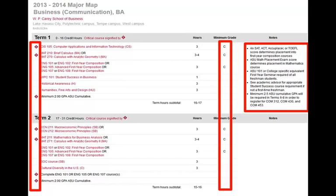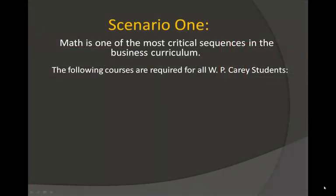Now let's take a look at a few scenarios to help you better understand the eAdvisor track requirements in the WP Carey School of Business. Math is one of the most critical sequences in the business curriculum. All WP Carey students, regardless of their major, are required to complete Math 210, Math 211, and Economics 221.